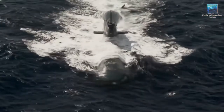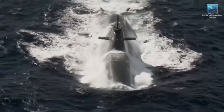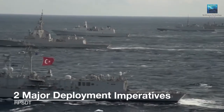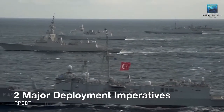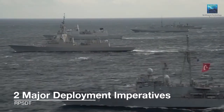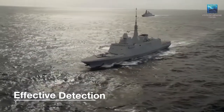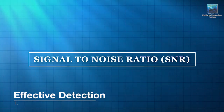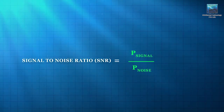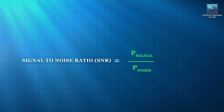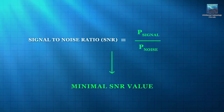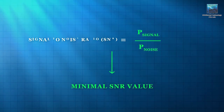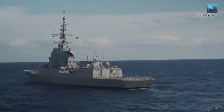The Real-time Passive Sonar Deployment Tool, RPSDT, has two major deployment imperatives. The first is Effective Detection. The signal-to-noise ratio (SNR) is the key parameter to ascertain the detection performance of the sonar at the deployment location. The aim is to have a minimal SNR value within the operational area to ensure effective detection.